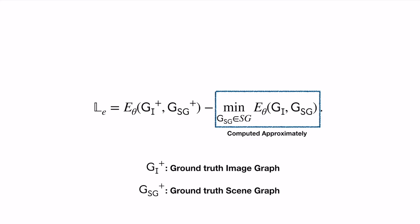This term is computed approximately using Stochastic Gradient Langevin Dynamics or SGLD. In addition to the generalized perceptron loss, we add two regularization terms.